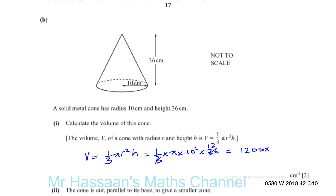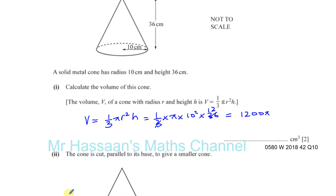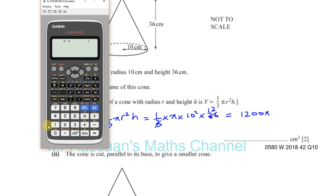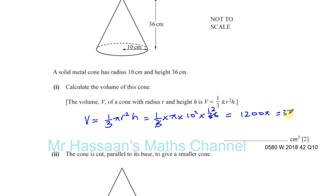It's important to write the answer in exact form (1200π) before rounding, because we may need that value again in a later part. Evaluating 1200π gives 3769.911... Rounding to three significant figures: the digit 6 rounds up to 7, so the answer is 3770 cm³.